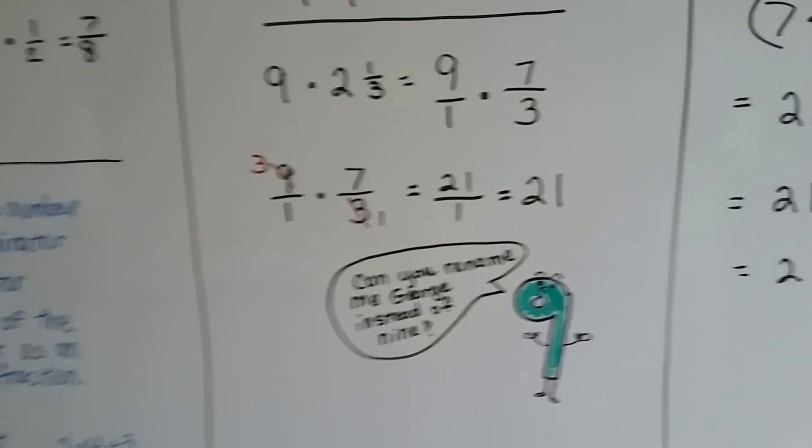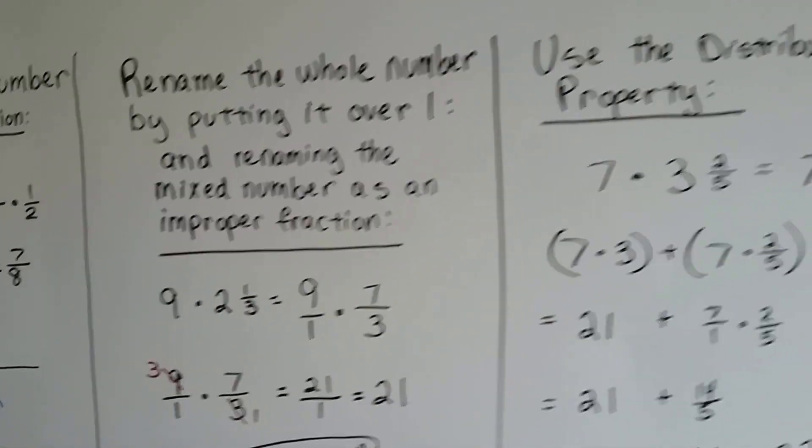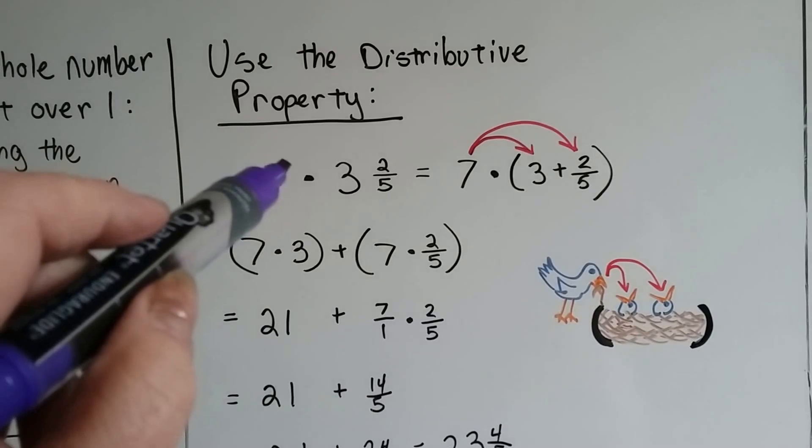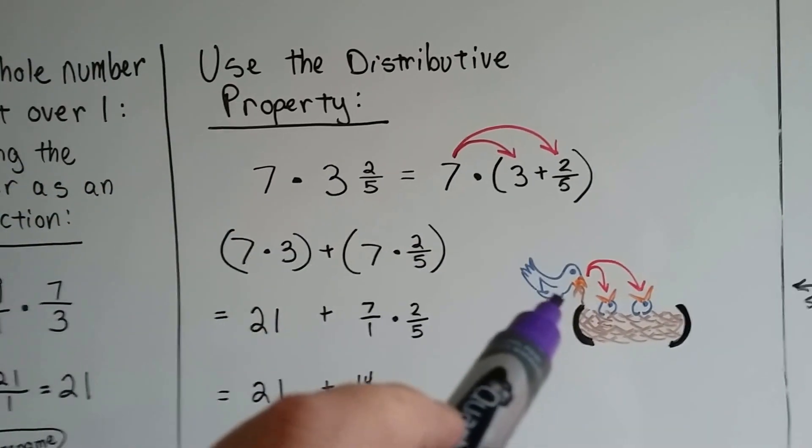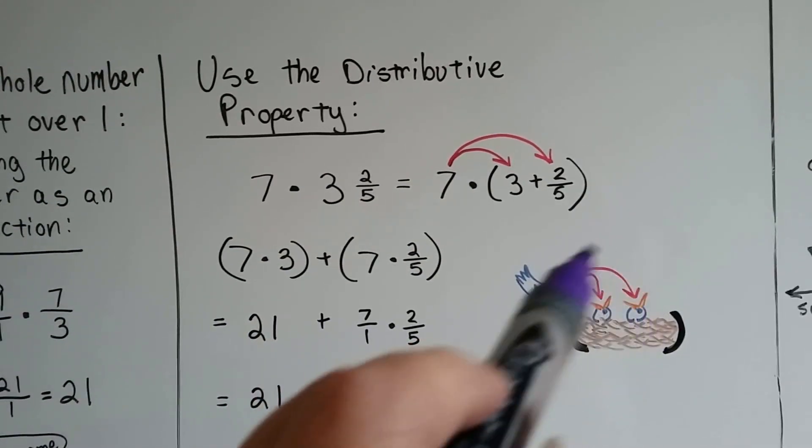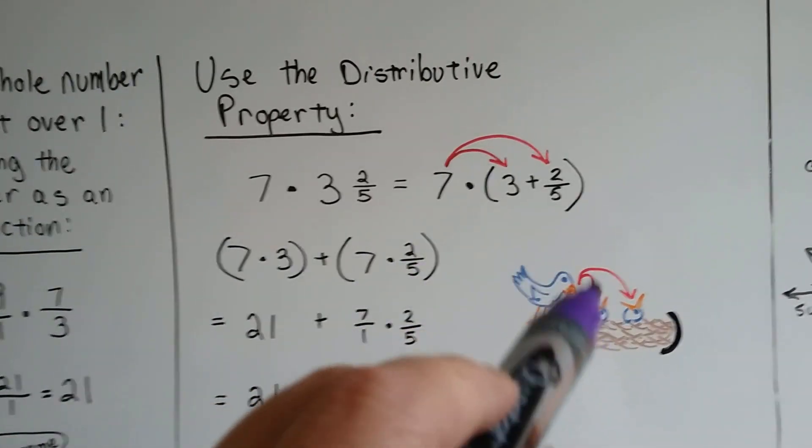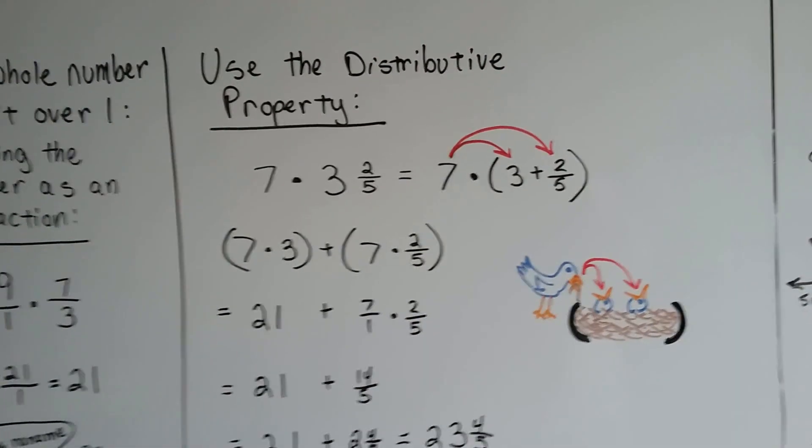And no, we can't name him George. We can also use the distributive property. If you remember, the distributive property is like the mother bird feeding her babies in the parentheses nest. She feeds one and then feeds the other and takes turns.